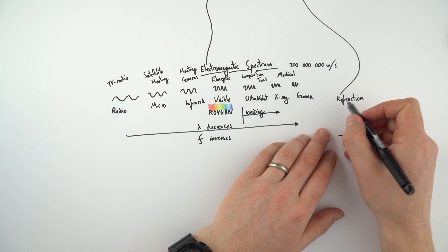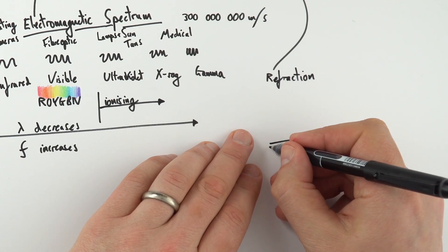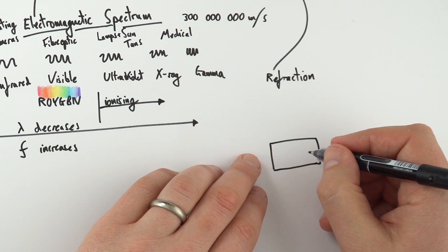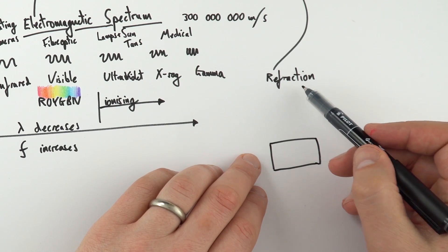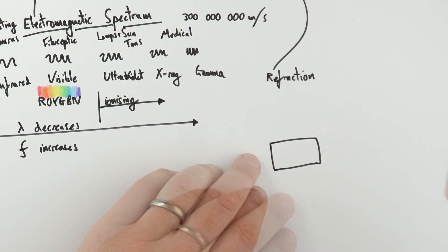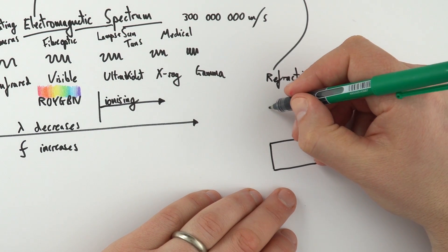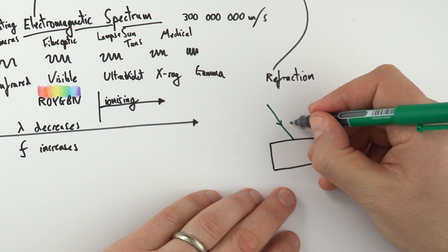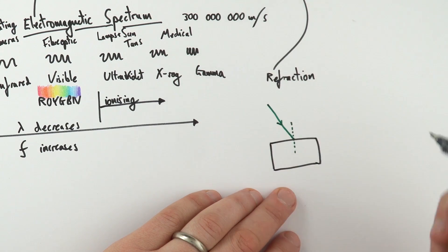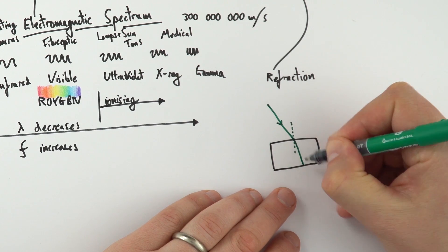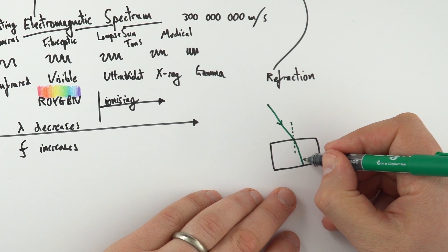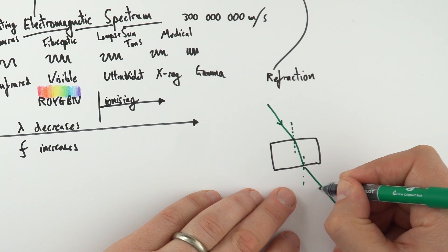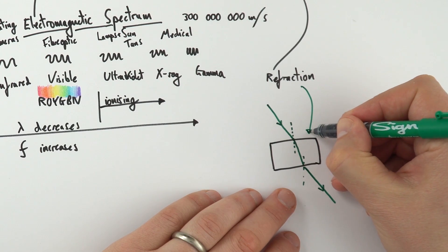Something else that light does is it refracts. Refraction is when you have a wave and it meets a different medium, a different substance, and then it changes direction because it changes its speed. You might get a glass block or perspex block, and you shine a ray of light at a certain angle. This hits the surface, so this is my normal. This changes direction through the medium, and then when it comes out the other side, it goes back into the original direction.